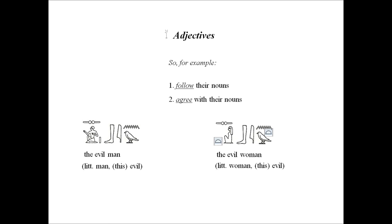This is how Egyptian works in regards to adjectives. Also notice that in the evil man and the evil woman, the word the is not actually written down but implied, as indicated before. So don't try to read it or find the word — it's simply added to make reading a lot easier.